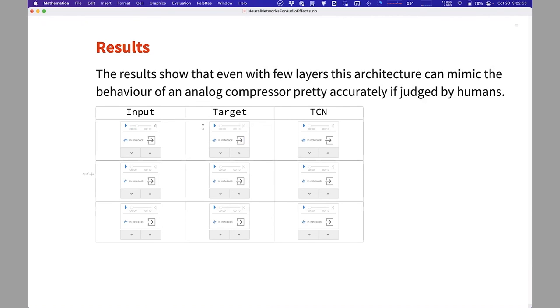The input signal. This is the actual analog unit. And this is the TCN network produced output. This has been evaluated by human testers and had very similar scores between the target and the TCN.